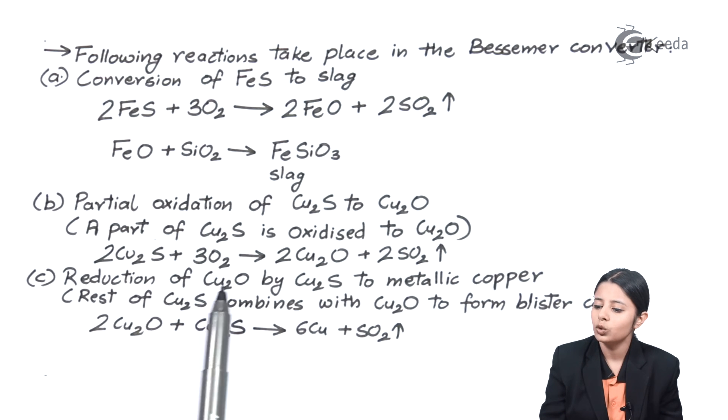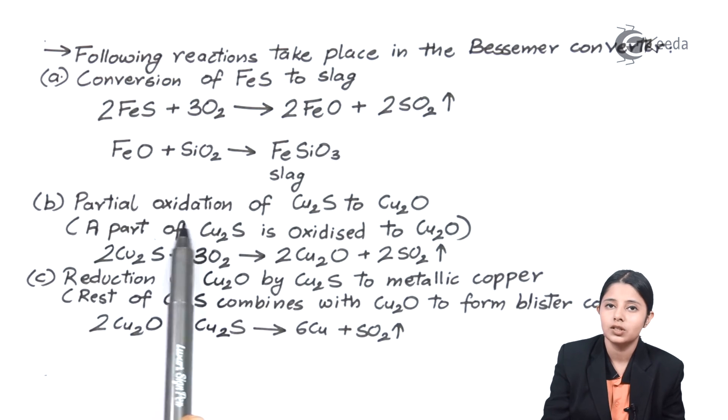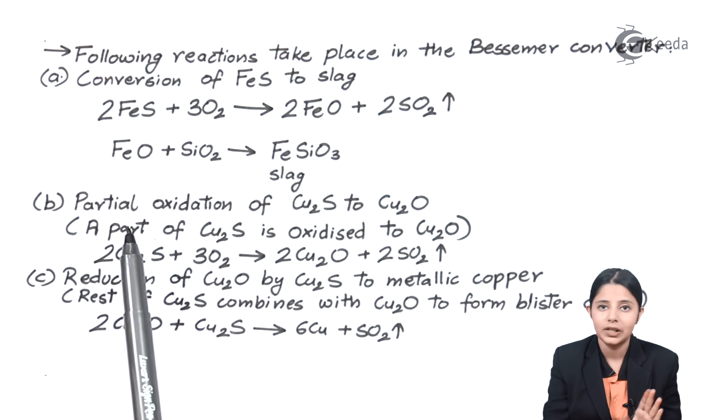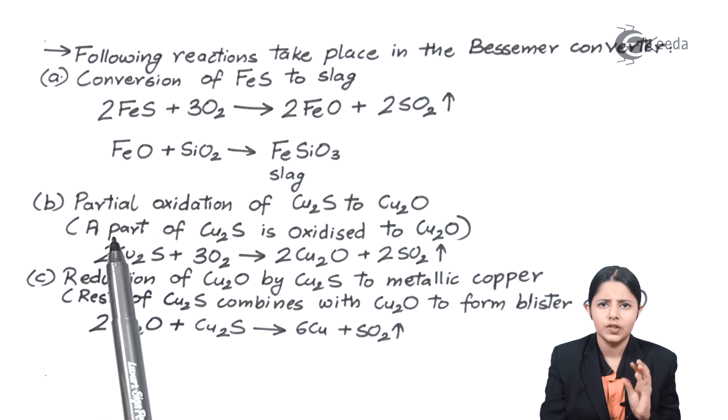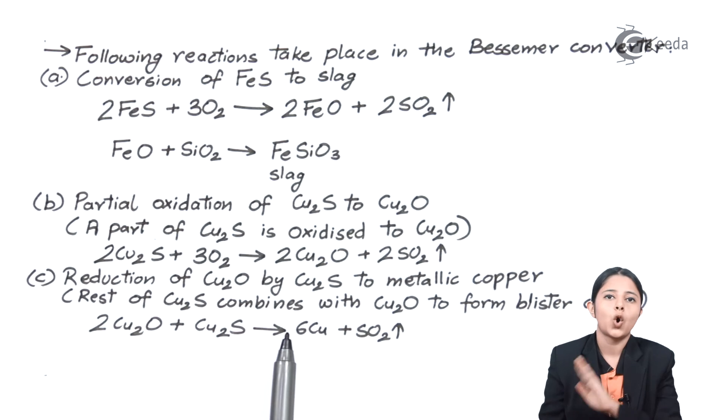Reduction of Cu2O by Cu2S to metallic copper. Rest of Cu2S combines with Cu2O to form blister copper. So now I have some part of Cu2S because there was partial oxidation in the second step not complete oxidation. So some amount of Cu2S is already remaining. So that some amount of Cu2S is used over here. 2Cu2S plus 2Cu2O forming 6Cu plus SO2. This 6Cu is the purest form of copper we get after all the processes.